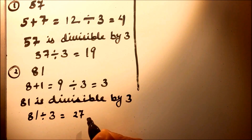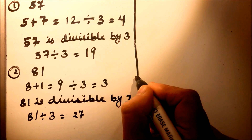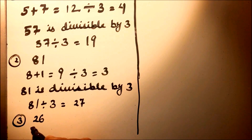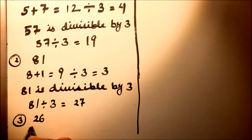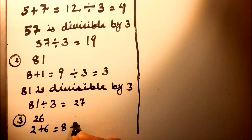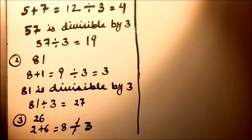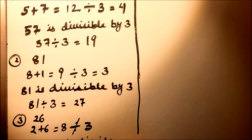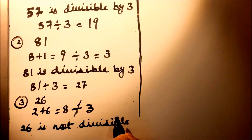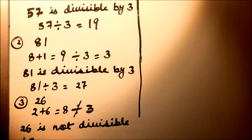Now let's take the number 26 and check this one. 2 plus 6 equals 8, and 8 is not divisible by 3. We cannot divide 8 by 3, so 26 is not divisible by 3.